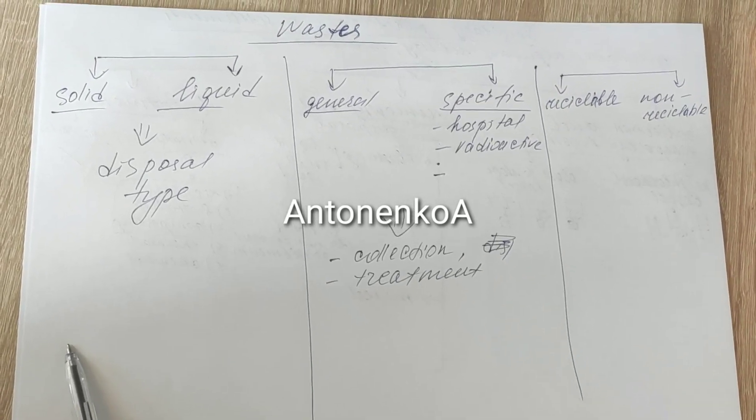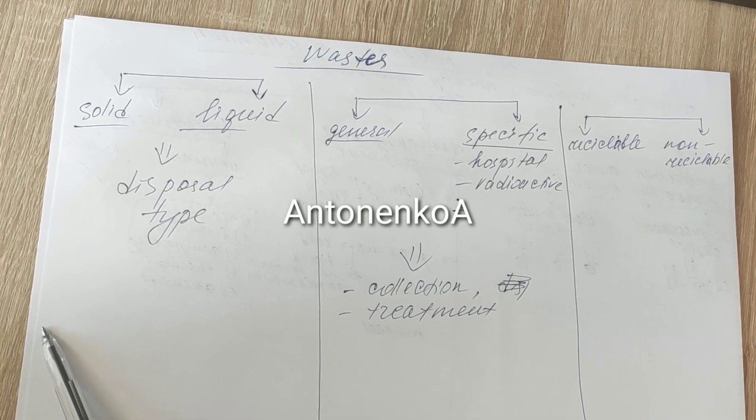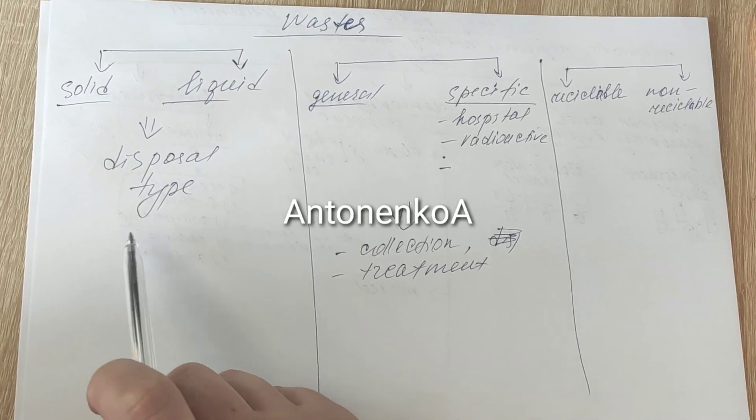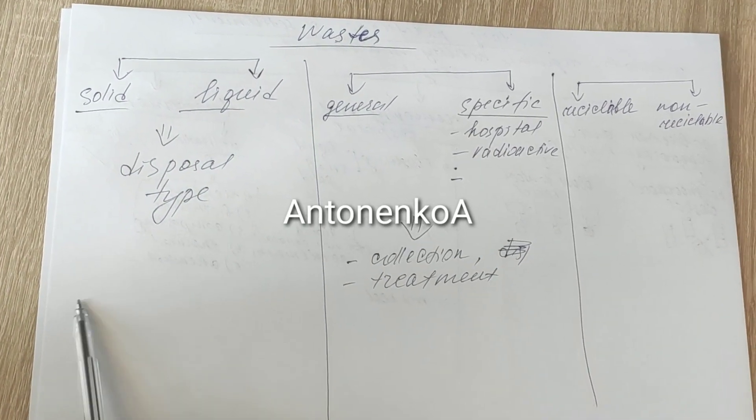So first of all, classification of the waste. Main classification is according to physical state. We have solid and liquid because the type of disposal, how we transport and collect this waste, will depend on the physical state. It's very simple.